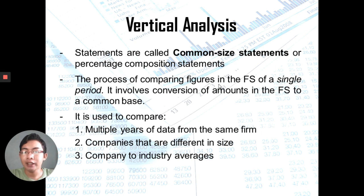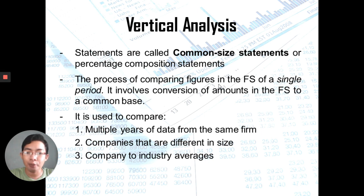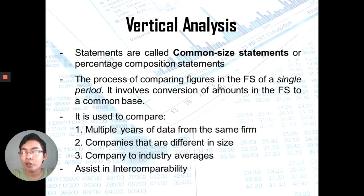We use Vertical Analysis for three purposes. Number one, to compare multiple years of data from the same firm. Number two, to compare companies of different sizes — for example, if I want to compare my food business to Jollibee, using amounts alone won't show my company's growth because Jollibee is a much bigger company. By converting to percentages — common size — we can compare to competitors in the industry. Number three, to compare the company to the industry average, which is the overall performance in a specific industry divided by the number of players. This enables inter-comparability.